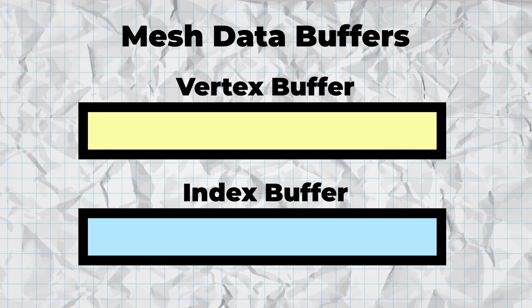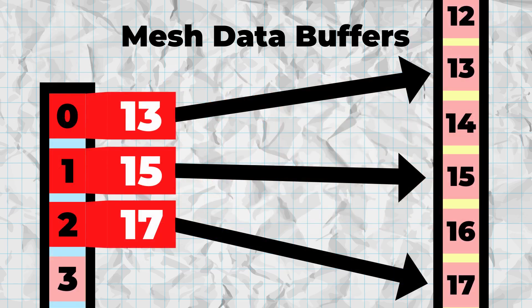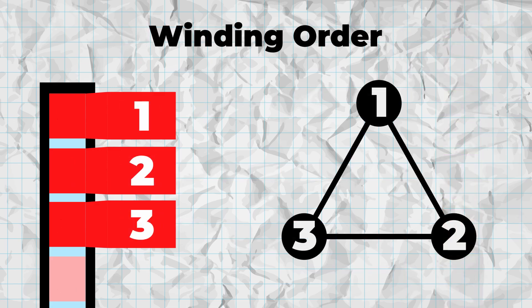Meshes in Unity are composed of two data lists: a vertex buffer and an index buffer. The vertex buffer contains all data about each vertex in the mesh, such as its position, normal vector, UV coordinate, and so on. The index buffer contains a list of integers. Its structure describes how the vertices connect together to form triangles. Each entry is an index into the vertex array, and every three consecutive entries describe a triangle composed of the vertices that they point to. The order of these points in the index buffer is also important, as it describes the triangle's winding.